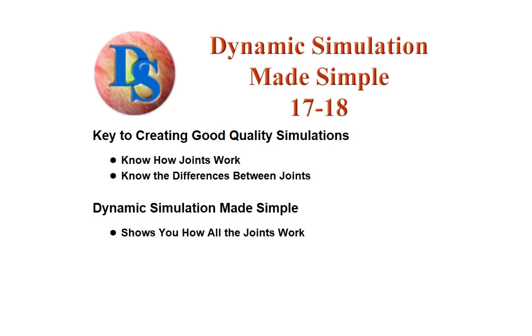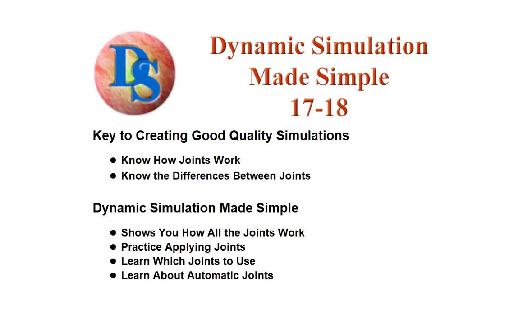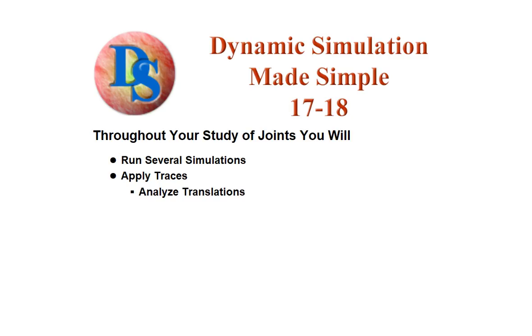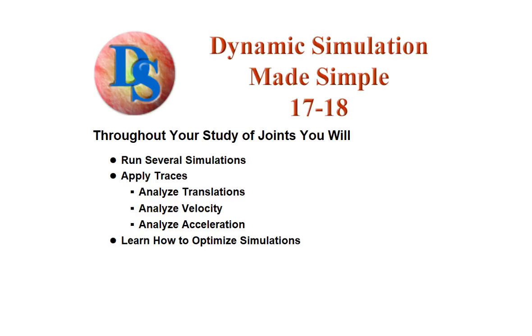One of the key components of creating good quality simulations is to know how joints work and the differences between all the joints. The course starts out by showing you how all the joints work. You'll practice applying joints, and you'll learn which joints are used in specific circumstances. A portion of joint creation is automatic, so you'll learn how to set up assemblies to get the most out of the automated process, and you'll learn where the automated process ends and the manual application of joints begins. Throughout our study of joints, you'll run several simulations, apply traces to analyze translations, velocities, and accelerations, and you'll learn how to optimize your simulations.